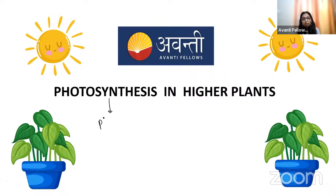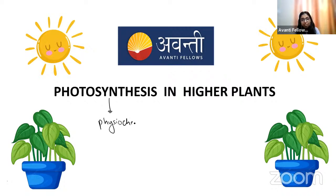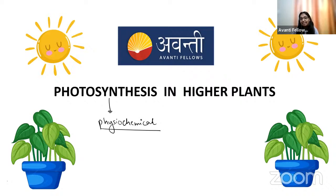So photosynthesis is a physiochemical process. Why is it physiochemical? Because the physical energy — the energy from the sunlight — is converted into high energy chemical intermediates like ATP and NADPH, which are the products of the light reaction. These high energy intermediates are utilized in the dark reaction for the synthesis of carbohydrate. That is why it is a physiochemical process. Remember this term.